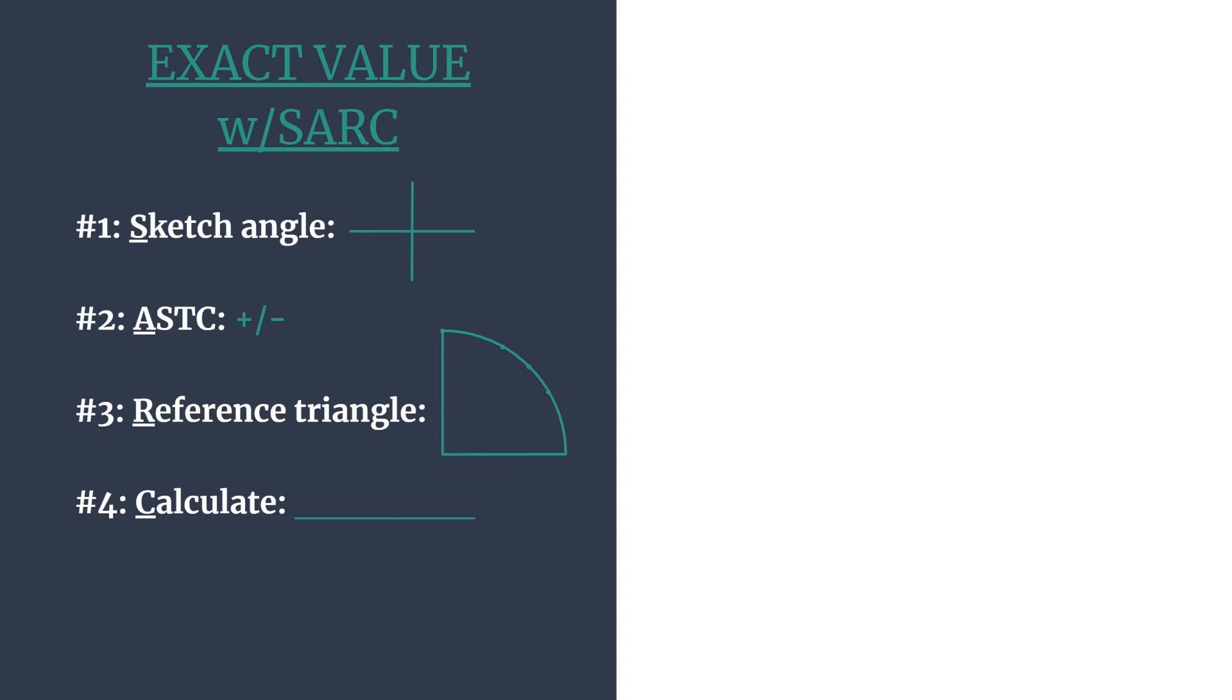You simply know it's either positive or negative. The R stands for reference triangle, so you'll find the reference angle and the triangle and coordinates that go with it so that you can use those coordinates in step 4. The C stands for calculate. You'll calculate your trig ratio.